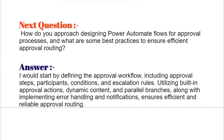Next question: How do you approach designing Power Automate flows for approval processes and what are some best practices to ensure efficient approval routing? I would start by defining the approval workflow including approval steps, participants, conditions, and escalation rules. Utilizing built-in approval actions, dynamic content, and parallel branches, along with implementing error handling and notifications, ensures efficient and reliable approval routing.